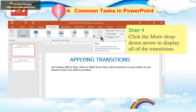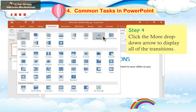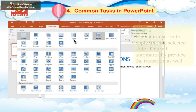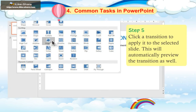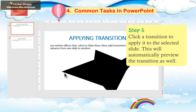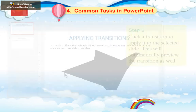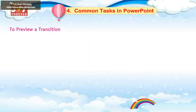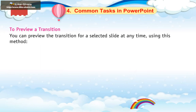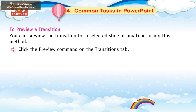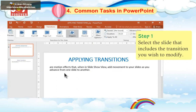4. Click the More drop-down arrow to display all of the transitions. 5. Click a transition to apply it to the selected slide — this will automatically preview the transition as well. To preview a transition, you can preview it for a selected slide at any time by clicking the Preview command on the Transitions tab.